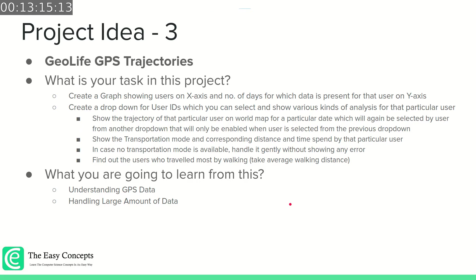We have to create a graph showing users on the x-axis — you can show their IDs like 0, 1, 2 and so on up to 181, because we have 182 users — and the number of days for which data is present for that user on the y-axis. So you have to count the number of days data is present for each particular user. Then create a web interface with a dropdown for user IDs, with numbers from 0 to 181. You select a user and perform various kinds of analysis for that particular user.